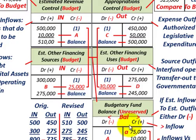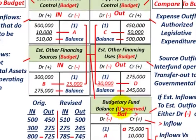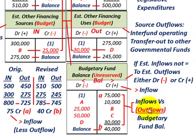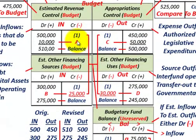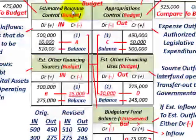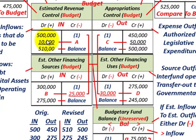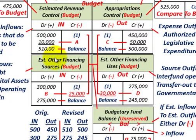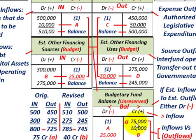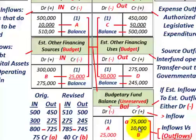So that's how you set up the budget. Now let's understand budget revisions. Looking at estimated revenue control — let's say we have an extra $10,000 coming in, increasing it to $510,000. We debit estimated revenue control by $10,000. Where does the credit go? The credit goes to our budgetary fund balance for $10,000. So debit estimated revenues $10,000, credit budgetary fund balance $10,000. Easy enough.